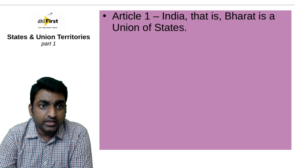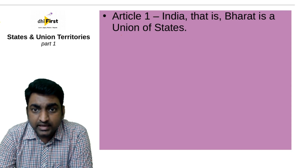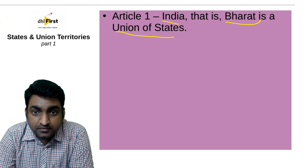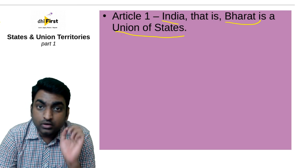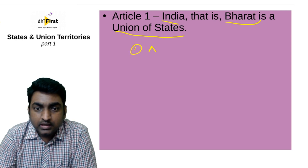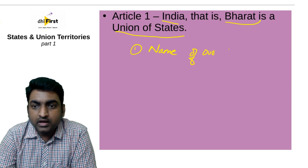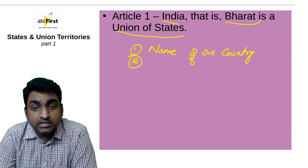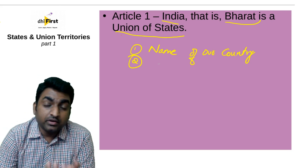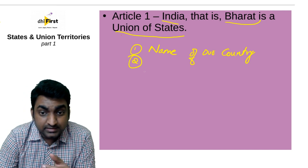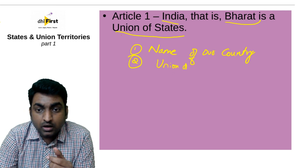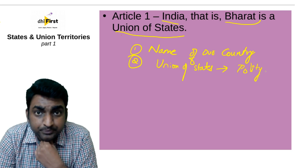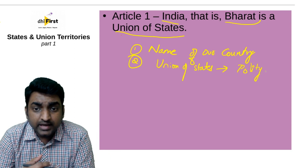Now, there are two things to observe here. The first thing it speaks about is the name of our country. The second thing it speaks about is the type of polity — what is the administrative structure of our country? It says we are a union of states, which gives us the idea of the polity of the country.